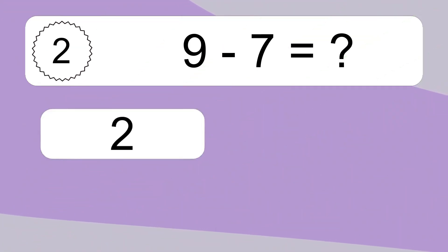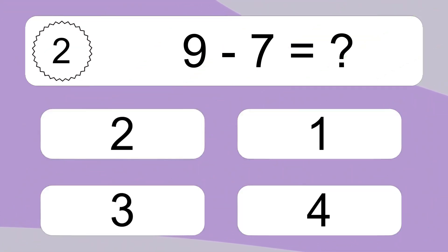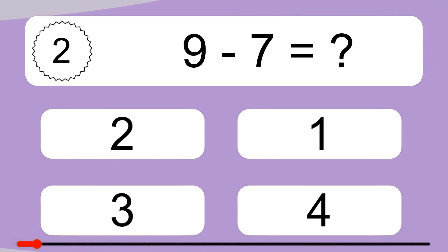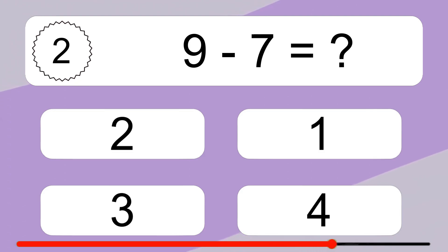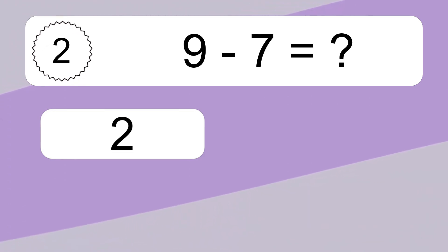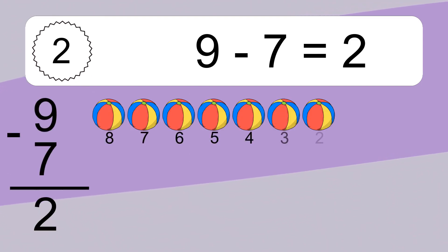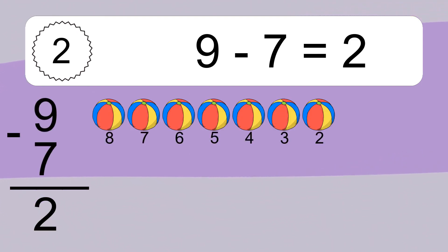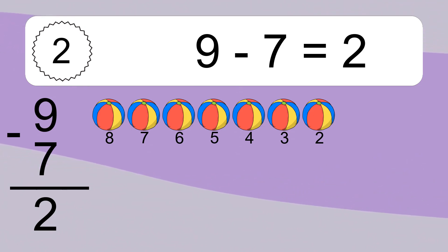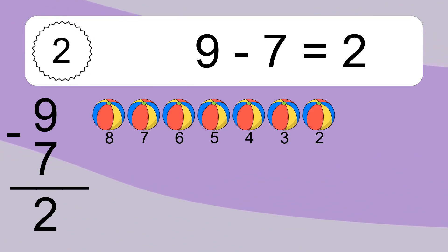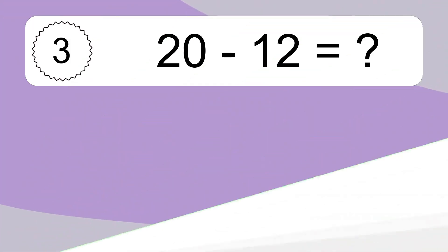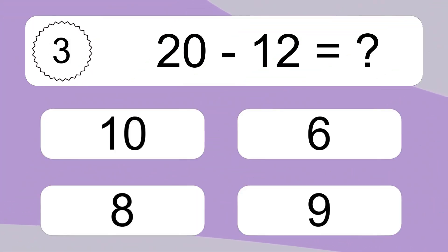9 minus 7 equals what? 9 minus 7 equals 2. Let's count it: 8, 7, 6, 5, 4, 3, 2.